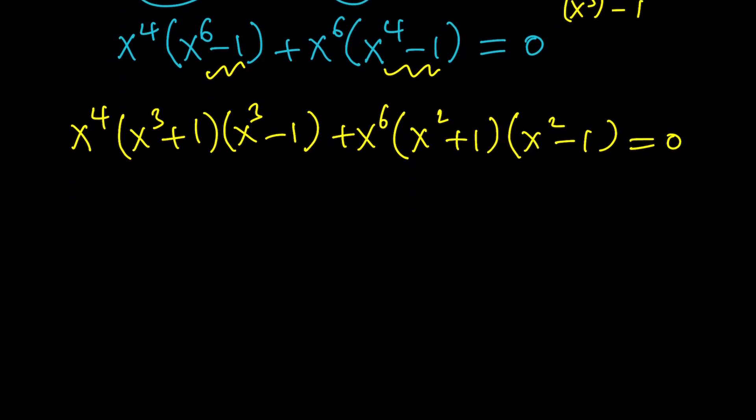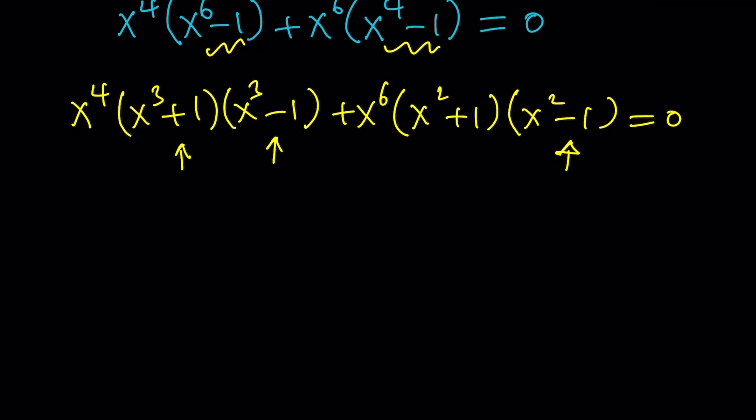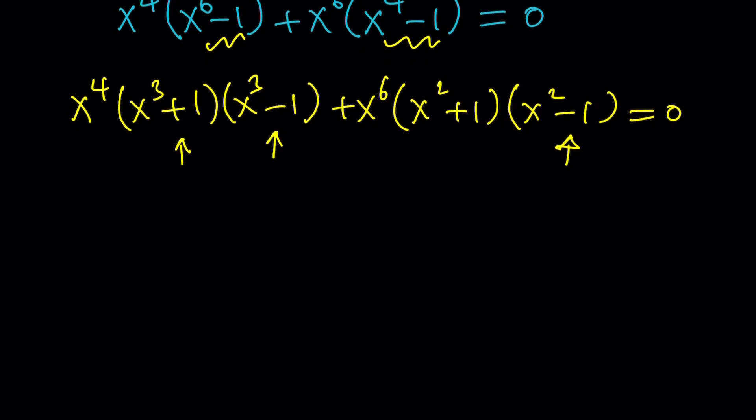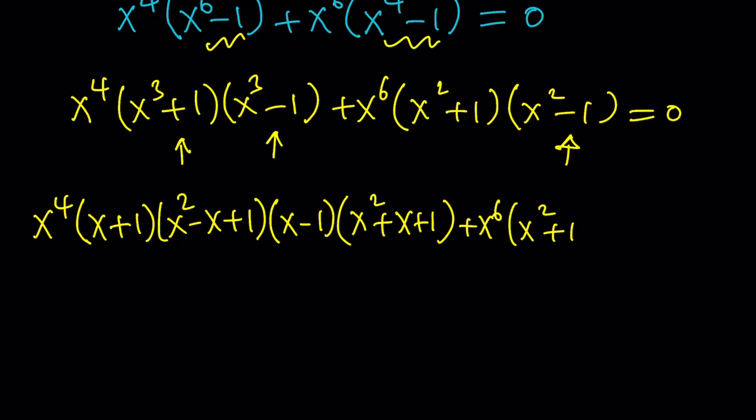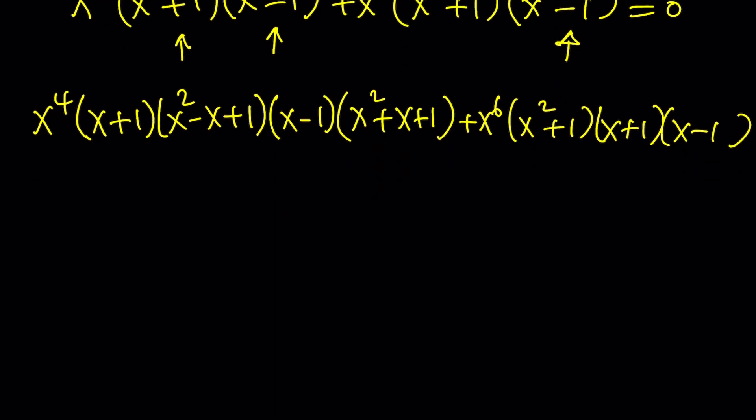And x to the 4th minus 1 is also a difference of two squares, which can be factored as such. Now, this is not the whole thing. x cubed plus 1 is a sum of two cubes. x cubed minus 1 is a difference of two cubes. And this is a difference of two squares. See, I told you there's going to be a lot of practicing factoring.